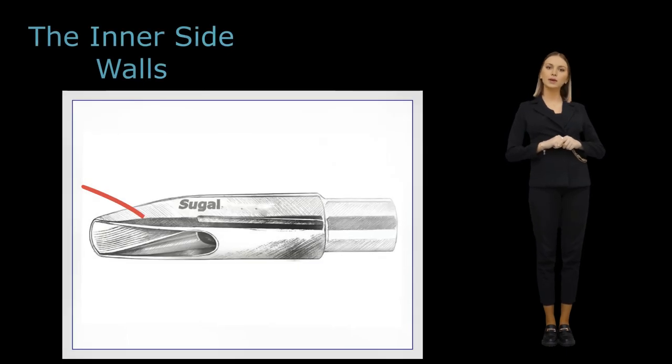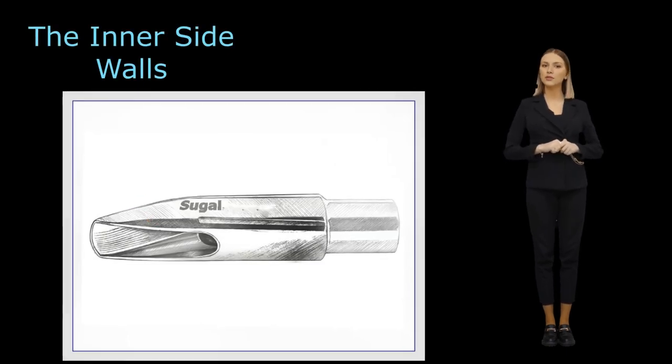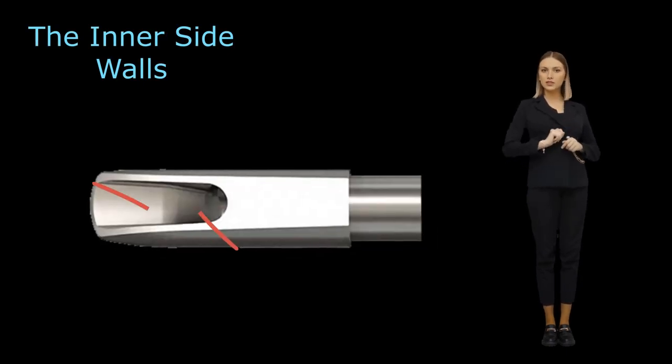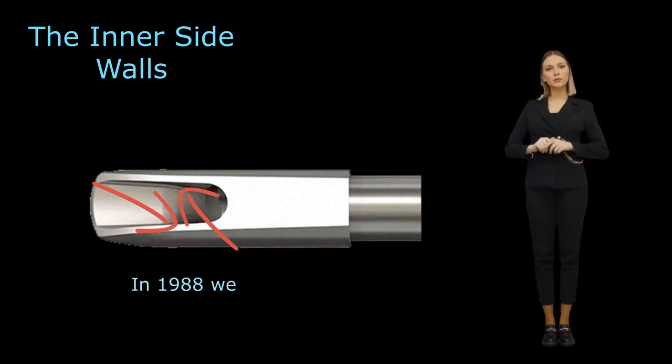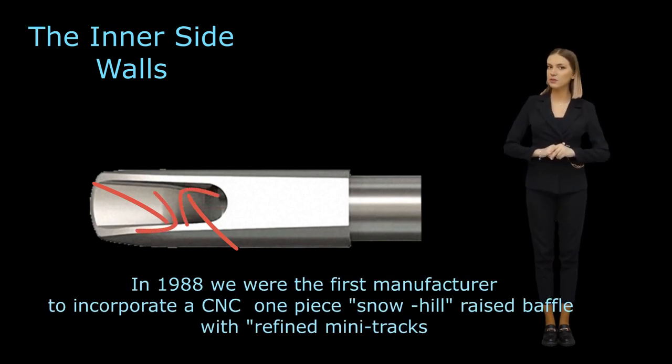The inner side walls are inside the mouthpiece, running from the floor up to the side rails. They can be concave in shape like an Otto Link, or flat like older Brillhart pieces where the chamber transitions to the bore. Sometimes the throat can be round or square in shape.